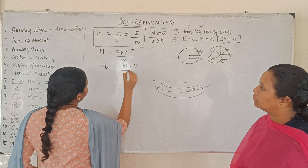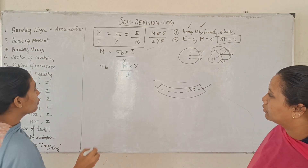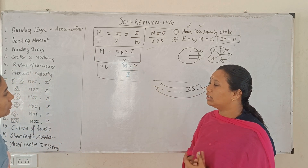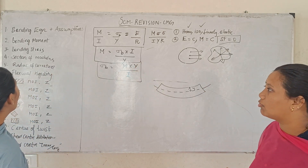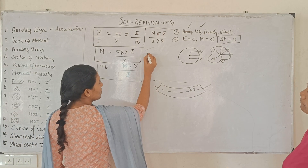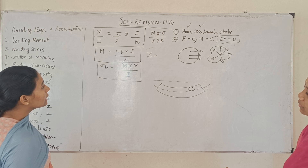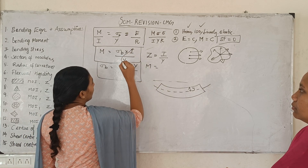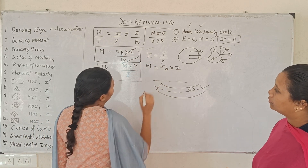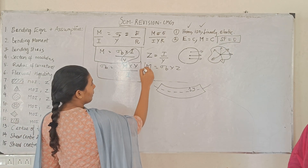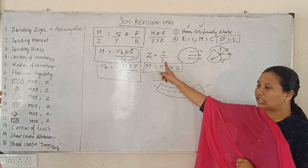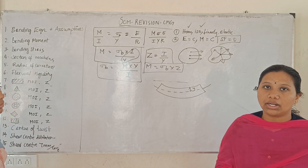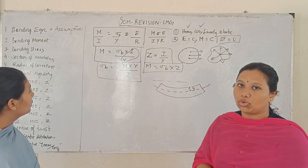Bending stress = M·y divided by I. So M is equal to sigma b into I divided by y, which equals sigma b into Z, where Z is the section modulus — moment of inertia divided by the distance from the neutral axis. So bending moment equals bending stress into section modulus.